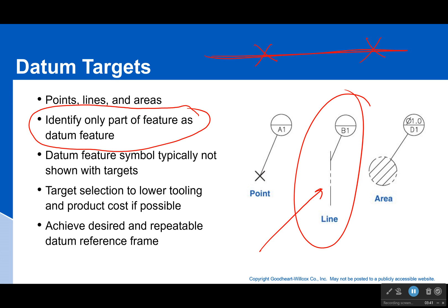We do this because it can help lower our tooling and product cost. You do this when it's going to make things a lot simpler than having to make some incredibly complex fixture to match your very complex surface.